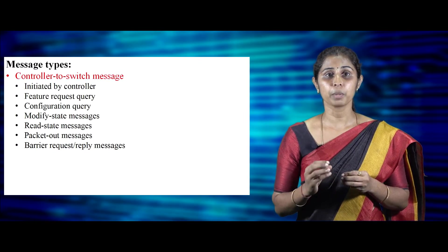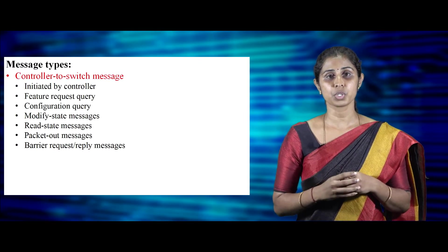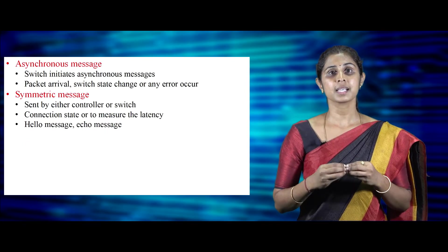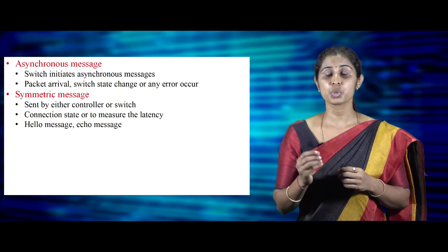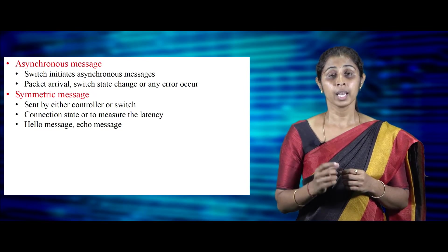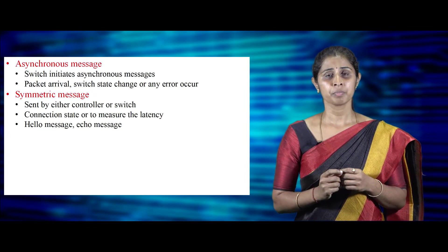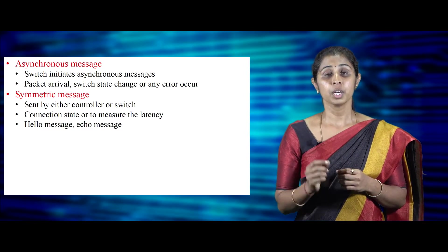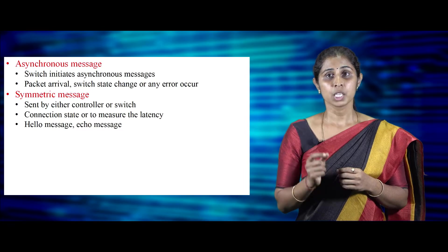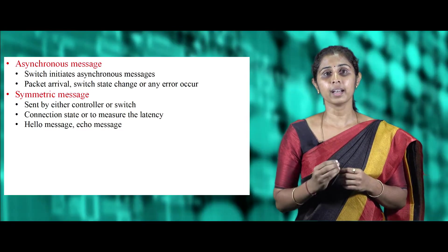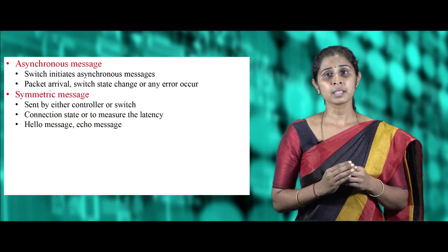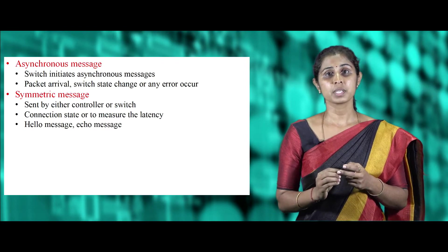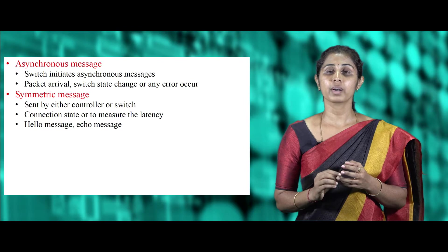The second type is asynchronous messages, which are initiated by the switch to update the controller about network events or changes in switch state. The switch sends asynchronous messages to the controller to address a packet arrival, switch state change, or any error that occurs. There are four asynchronous message types: packet-in message, flow removed message, port status message, and error message.